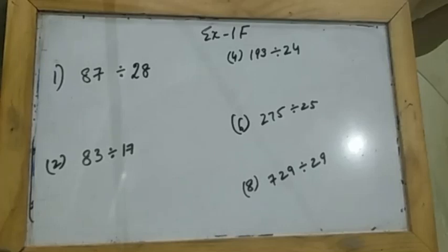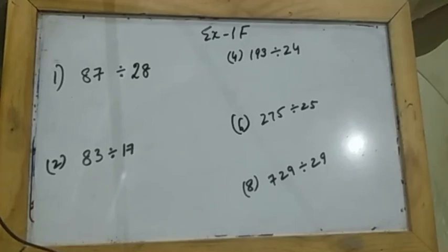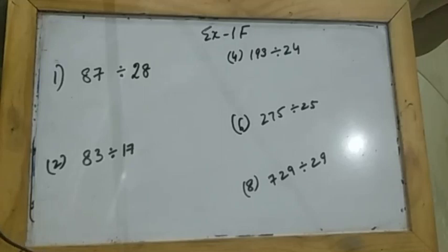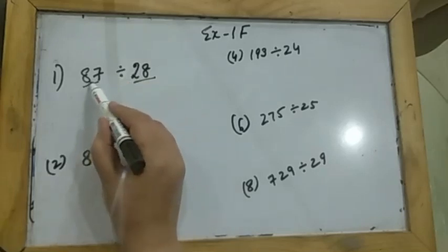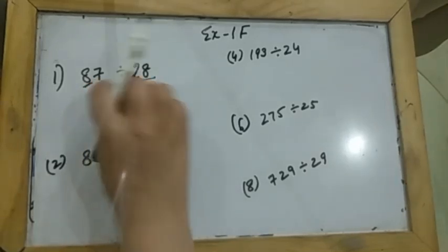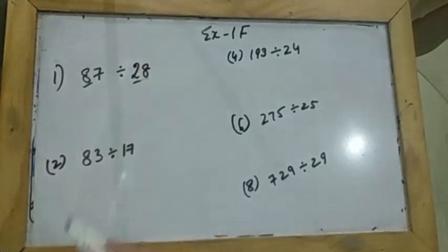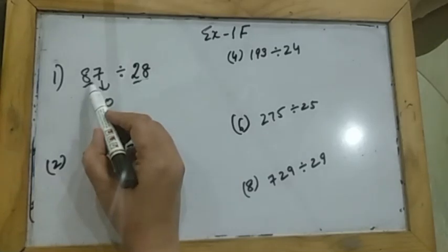Now we start with Exercise 1f. In this you have to estimate the quotient. Estimating the quotient means you round the numbers first and then divide them. Your instructions say whether to round off to the nearest 10, 100, or 1000. Since the numbers given here are two digits each, I will round off to the nearest 10.